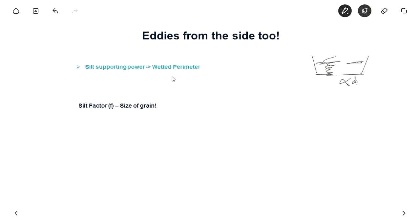So the silt supporting power is proportional to the wetted perimeter. That is, the whole perimeter is taken into account. So that actually the eddies form from all the sides. So the silt supporting power, that is, the silt which is in suspension is by eddies from all sides. So it is kind of proportional to the wetted perimeter. And the silt factor which he applied was dependent on the size in mm. So he defined it as f equal to 1.76 root of d mm, where d is the average size particle in millimeters.